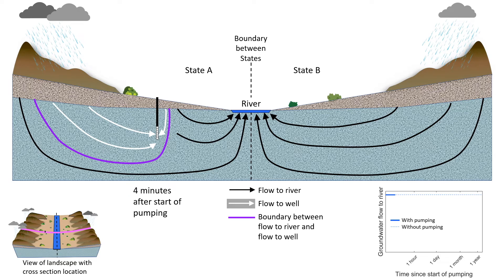Here are conditions 4 minutes after the well starts pumping. On the cross section, the white lines with arrows are flow paths to the well and the purple line is the boundary between where the groundwater flows to the well and where it flows to the river. On the graph, the solid blue line shows the amount of groundwater flow to the river at 4 minutes of pumping, which is equal to the flow with no pumping shown by the dashed line. At this early time, the well captures groundwater storage in the aquifer rather than groundwater discharge to the river prior to pumping.